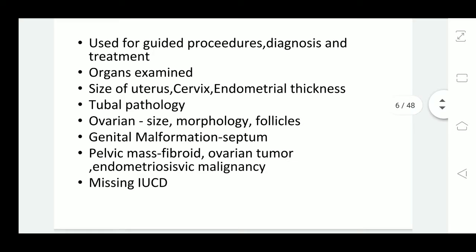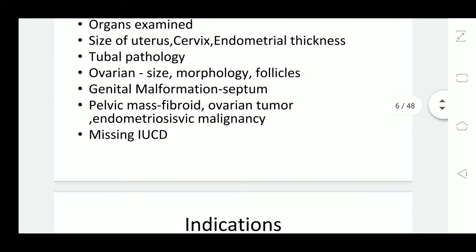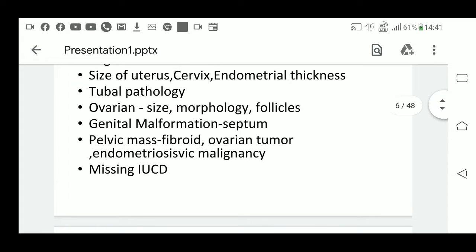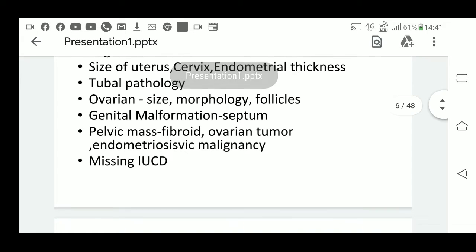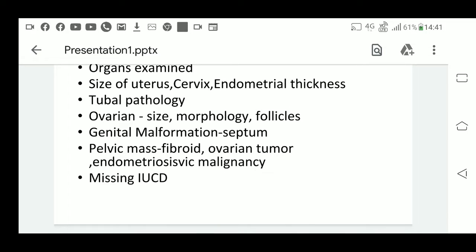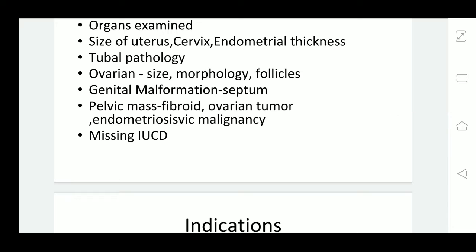Normal tubes are not visible on ultrasound, but whenever there is pathology like hydrosalpinx or pyosalpinx, the tube is enlarged and filled with fluid — it may be visible. For ovarian tissue, we see the size, dimensions, volume, morphology, and number of follicles, their size, and growth. Serial ultrasound will tell us the growth pattern of the follicle. We also often need to do ultrasound to know genital malformations. Different types of pelvic masses — fibroids, ovarian tumour, endometriosis, malignant masses — can be assessed by ultrasound.